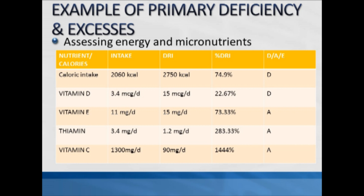Starting with calories, in this particular example the analysis shows that the patient consumed 2,060 calories. Based on their activity factor, height, weight, and age, their DRI is 2,750 calories. The calculation is 2,060 over 2,750 times 100, and we get that the patient's caloric intake is 74.9 percent of the DRI.